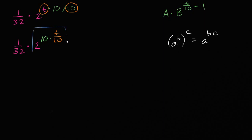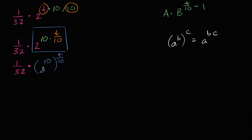So this piece right over here, I can rewrite it as 2 to the 10th and then raise that to the t over 10 power. Once again, 2 to the 10th raised to the t over 10 is the same thing as 2 to the 10 times t over 10. And we still have the 1/32 over here. We might be tempted to write that as 2 to the negative 5th, but let's keep it for now. 2 to the 10th is 1024, so we have 1/32 times 1024 to the t over 10 power.